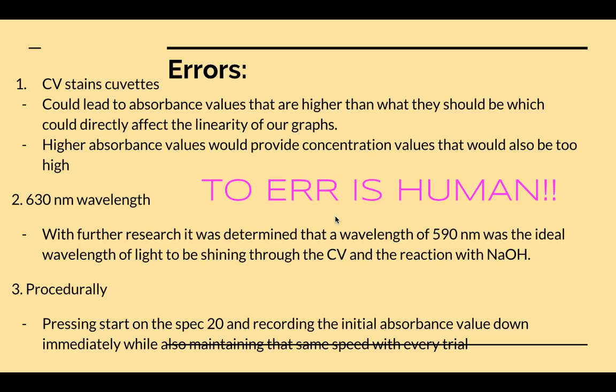Other errors that were a little bit more on the human side. We chose 630 nanometers as our wavelength, and in hindsight for the post lab, as I was researching, I did find that an ideal wavelength was actually 590. But having said that, it's not that large of a difference, so it shouldn't have affected our data too badly. But I will explain in a little bit why I'm considering that as an error.